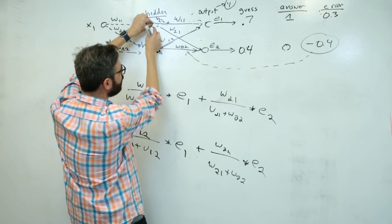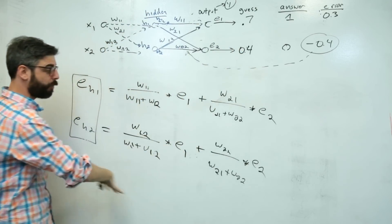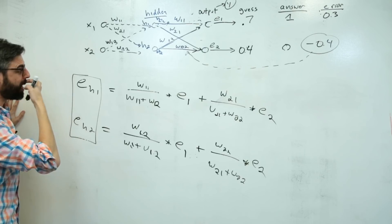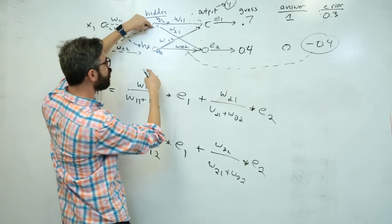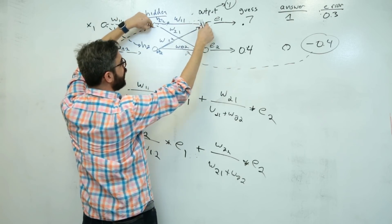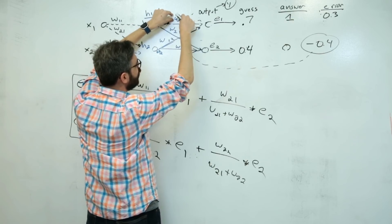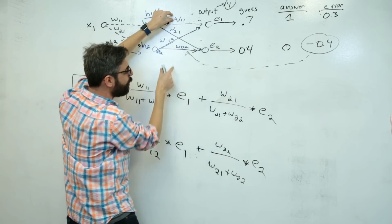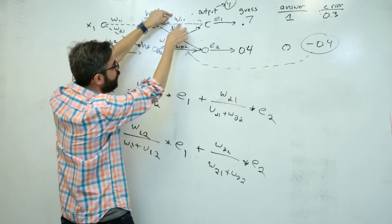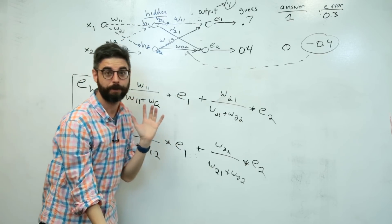Let's make this error a portion of that error. These were the formulas I went through. Look at this hidden neuron connected to this output - this is the weight. How much is this weight a percentage of all the other neurons that are connected? It's just two in this case, so it's just the sum of these two, but there could be many more.